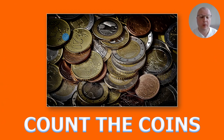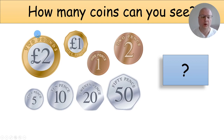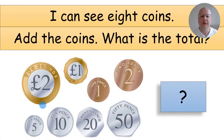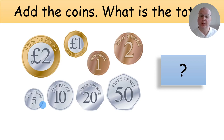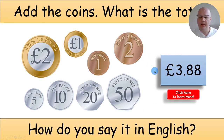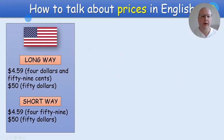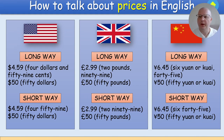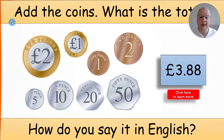Exercise number one: Count the Coins. This is a simple one — you ask your students how many coins can you see, and they'll say 'I can see eight coins.' Then add the coins: what is the total? Most probably they're not going to be able to say the price correctly in English, that's why you have this button 'Click here to learn more.' If you click it, it takes you to a slide where you learn how to talk about prices in English for these countries. Then you click the home button and it takes you back to the slide you came from.